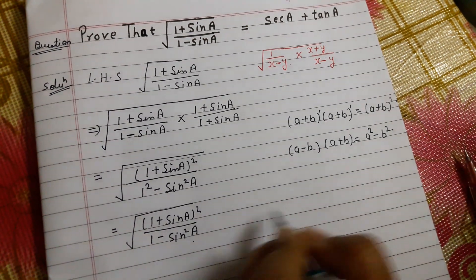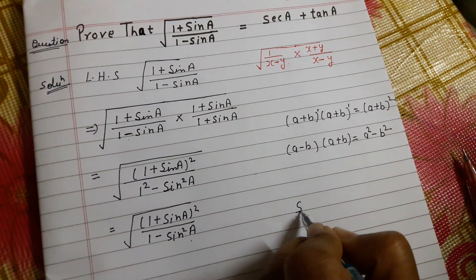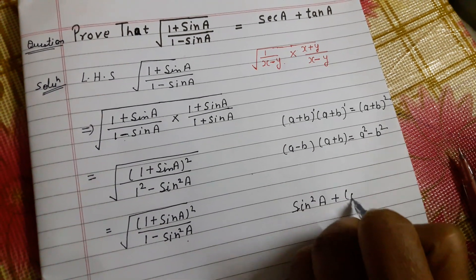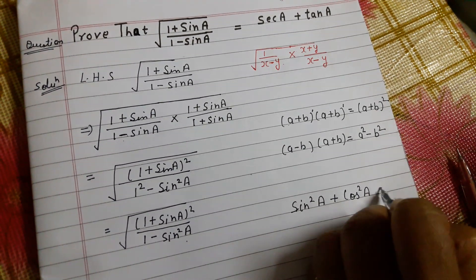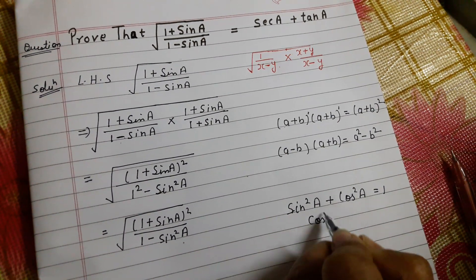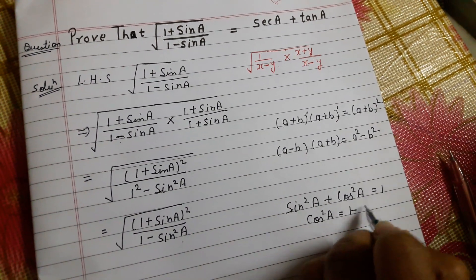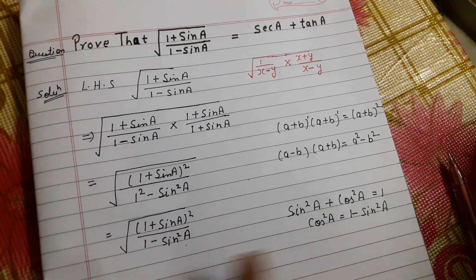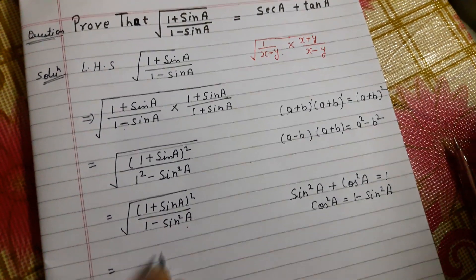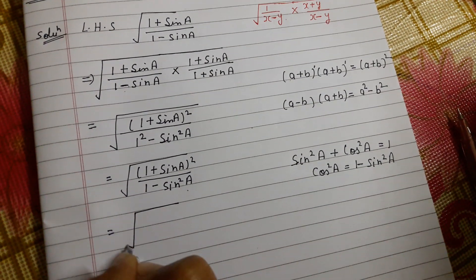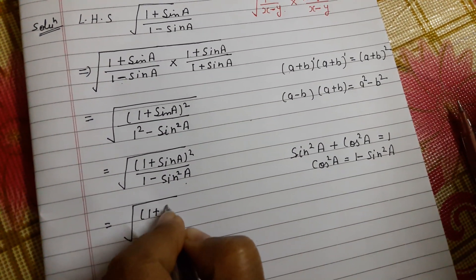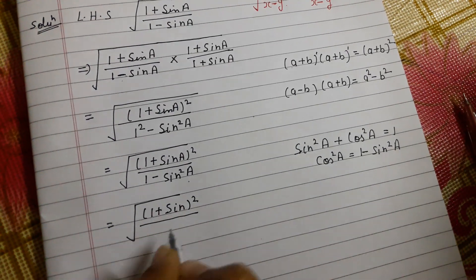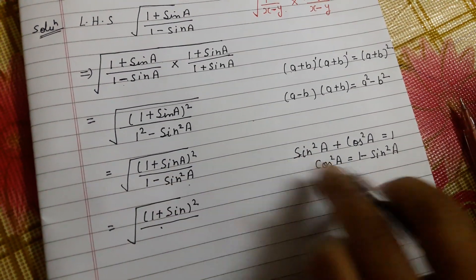In the denominator we have (1 - sin²A). Using the first trigonometric identity: sin²A + cos²A = 1, we get cos²A = 1 - sin²A. So we substitute this value in the denominator. Now the expression under the root becomes (1 + sinA)² / cos²A.